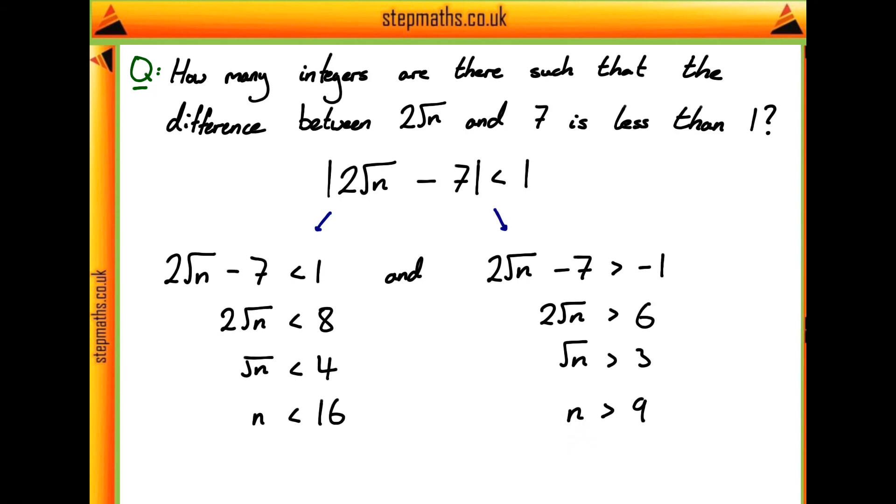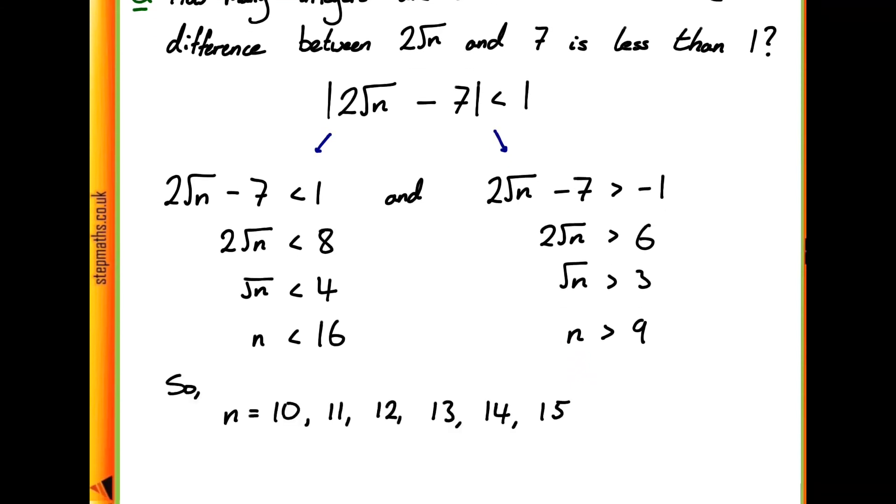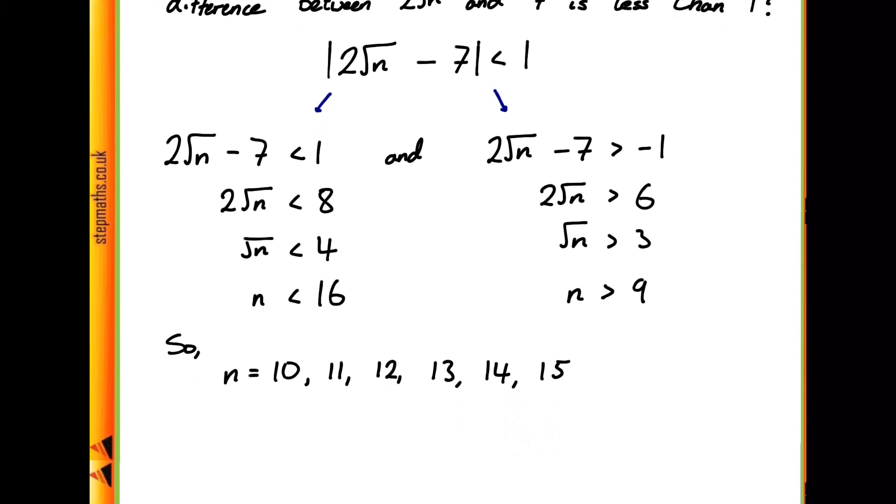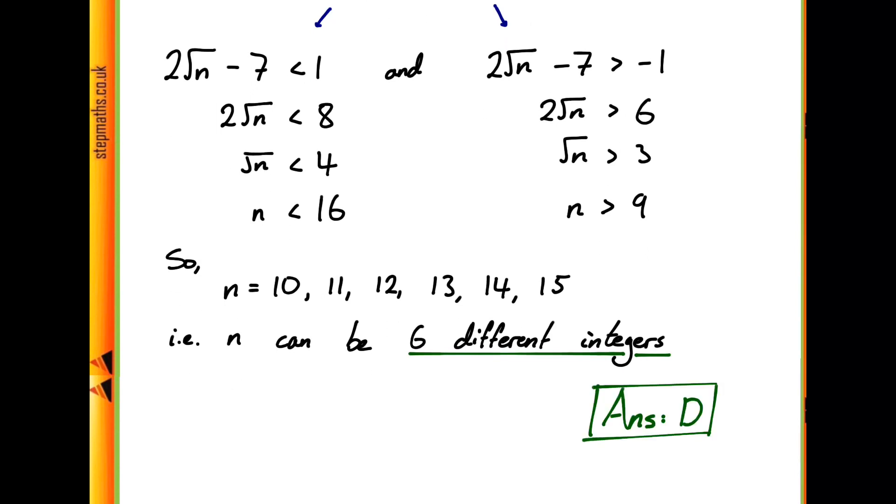So we know that n has to be between 9 and 16, and can therefore take on the integer values of 10, 11, 12, 13, 14, and 15. Which means that n can take on 6 different integer values, so the answer to the question is d, that n can take on 6 different values.